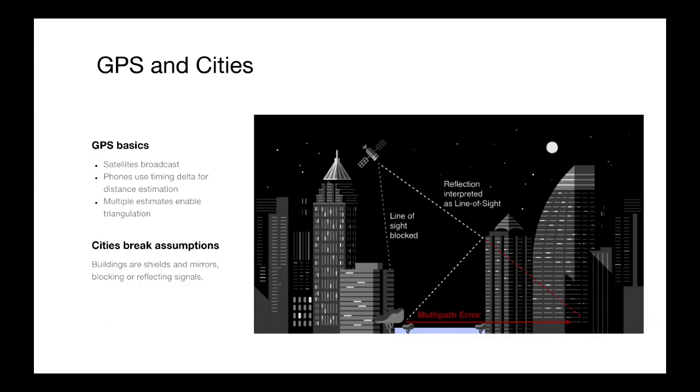That all sounds great. Unfortunately, cities actually break a lot of the fundamental assumptions that GPS makes. Buildings act as both shields and mirrors. You can see in this diagram, we have both blocked line of sight, so your phone won't be able to observe that particular satellite. Or even worse, buildings will actually bounce signals off of them. We have what's called a multi-path error. The signal will actually bounce off the building and then to your phone, and your phone will assume it's a straight line distance and think you're actually on the other side of that building.